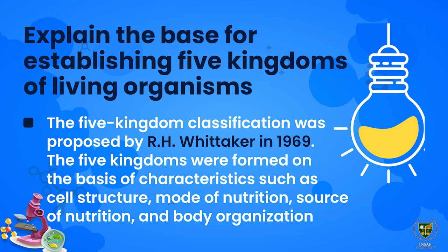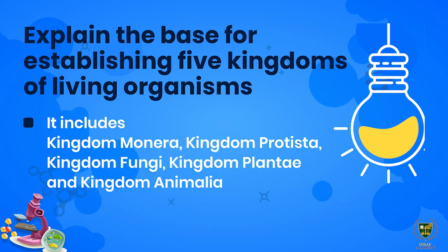The five kingdoms are: Kingdom Monera, Kingdom Protista, Kingdom Fungi, Kingdom Plantae, and Kingdom Animalia. These are the five kingdoms into which organisms are classified.